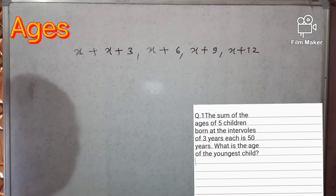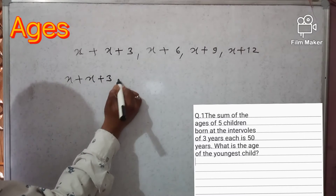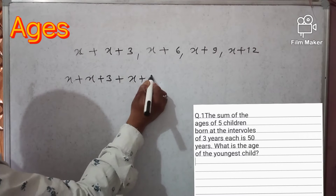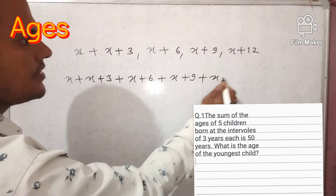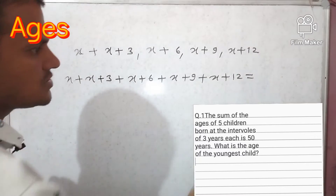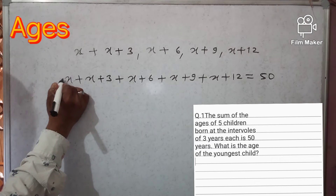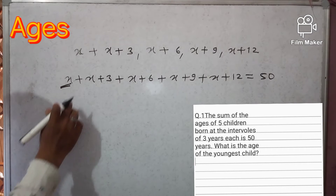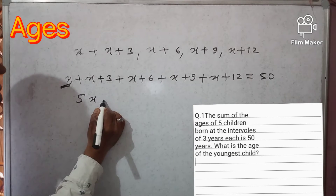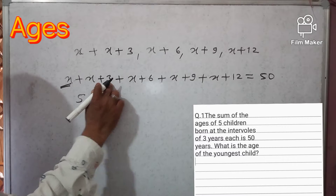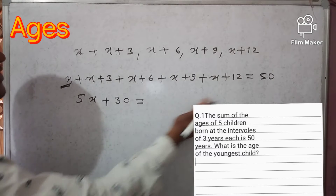So we have five children: one, two, three, four, five. The question says the sum is 50, so we have to add: x plus (x+3) plus (x+6) plus (x+9) plus (x+12) equals 50. Our target is to find the youngest child, which is x. Combining like terms: 5x plus 3 plus 6 plus 9 plus 12 equals 5x plus 30.